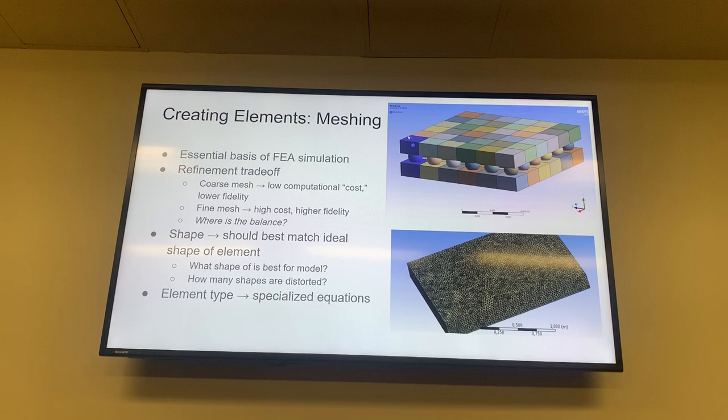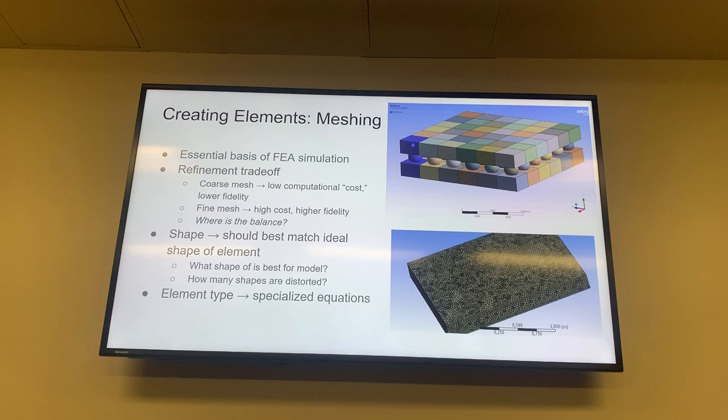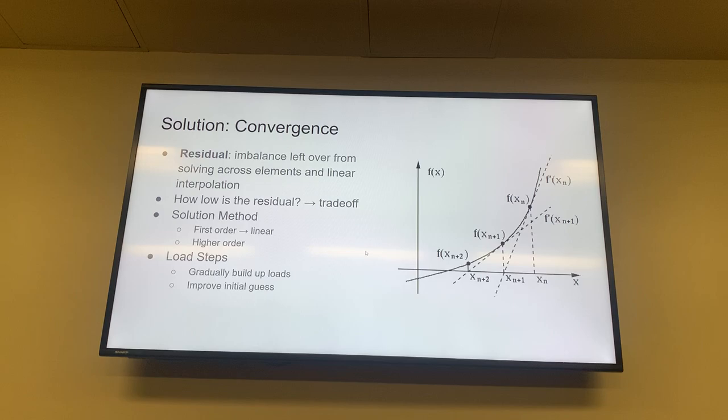The shape of the elements is also important. Common shapes are prisms and tetrahedrons — little triangular pyramids. Depending on your model and problem, different shapes are best. You also need to make sure the shapes aren't too distorted, because the more distorted the shape, the less accurate your interpolation across that element. There are ways in ANSYS to check the quality of your mesh to make sure it's going well.